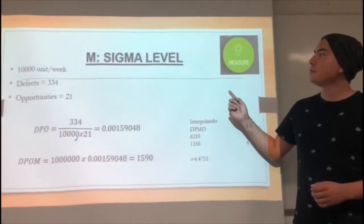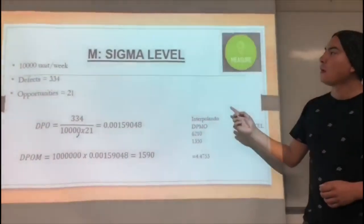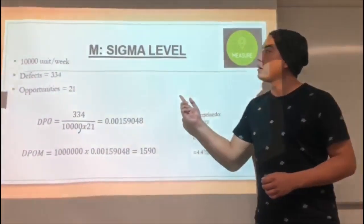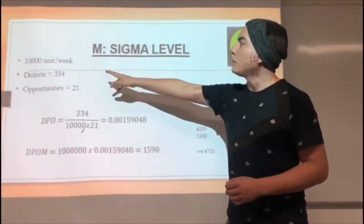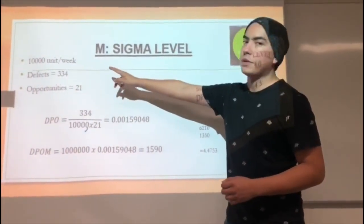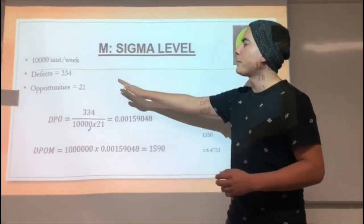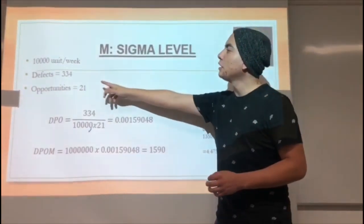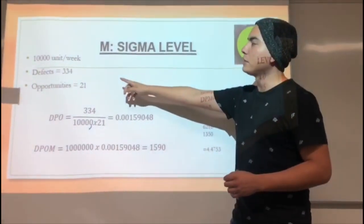In the second point we have sigma level. If we produce 10,000 units per week, we have approximately 354 defects.